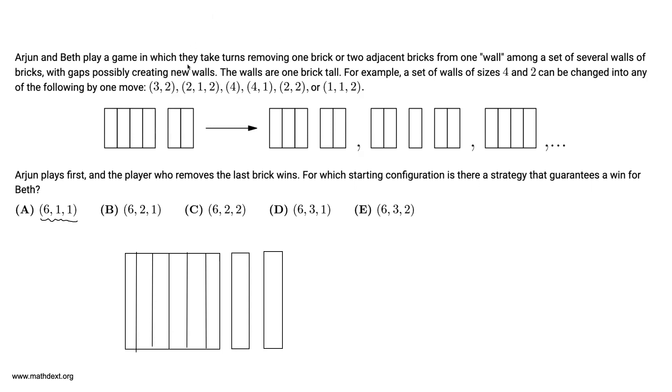And it turns out Arjun's winning strategy is to get rid of these two blocks. What he's going to leave Beth with, since he's removing these two little blocks, he's going to end up with a 2-2-1-1 split, right?